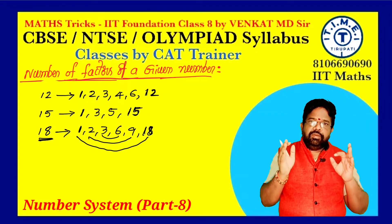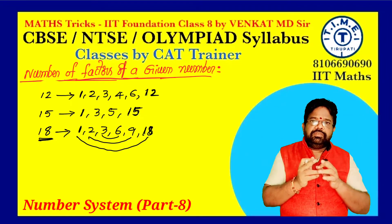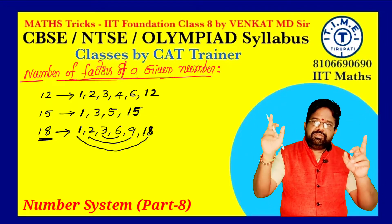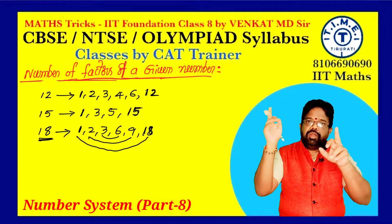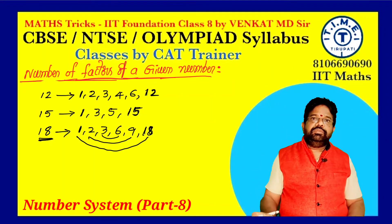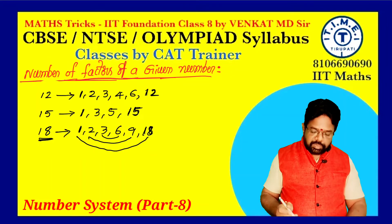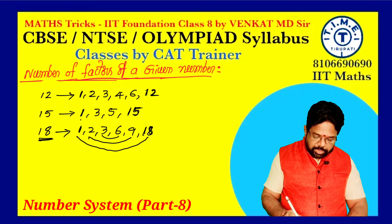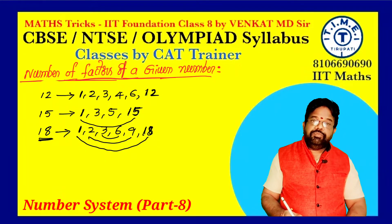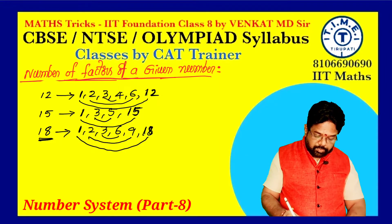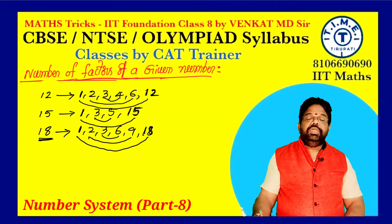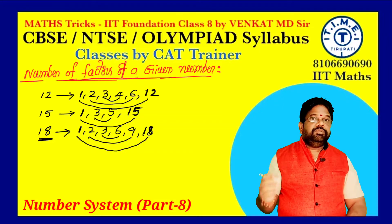If you take any number, the product of first and last factor is the same, second and second-from-last product is the same, third and third-from-last product is the same — always. For 15: 1 × 15 = 15, 3 × 5 = 15. For 12: 1 × 12 = 12, 2 × 6 = 12, 3 × 4 = 12. That is the nature of the factors.